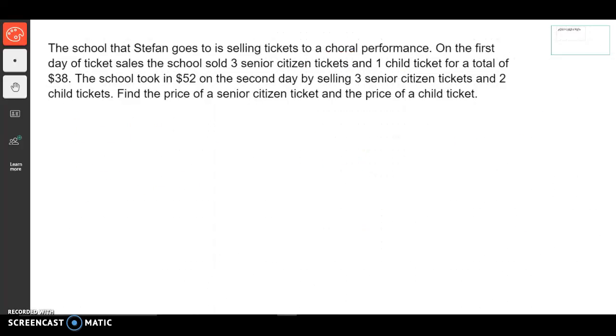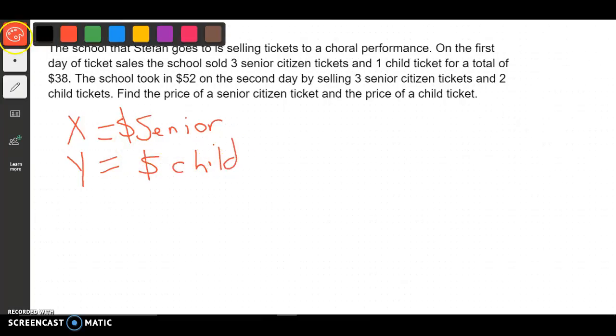Let's try one more. Again, we're going to have a word problem, and the first thing we're going to do is find its x and y. When I read this, the school that Stefan goes to is selling tickets to a choral performance. On the first day of ticket sales, the school sold 3 senior citizen tickets and 1 child ticket for a total of $38. The school took in $52 on the second day by selling 3 senior citizen tickets and 2 child tickets. Find the price of the senior citizen ticket and the child ticket. So we want to know x is our senior citizen ticket price, and y is the child's price.